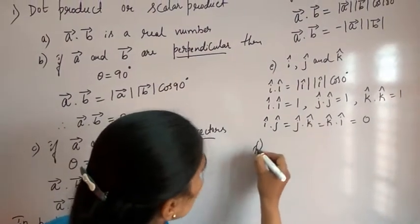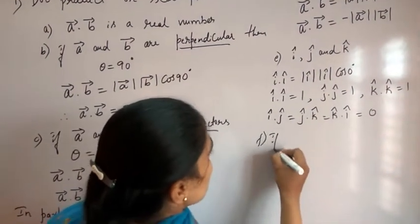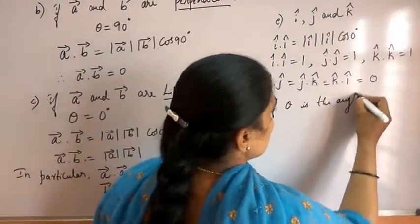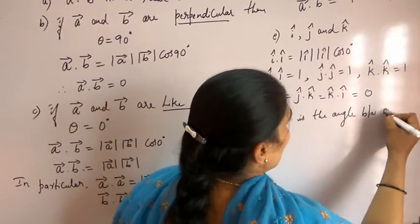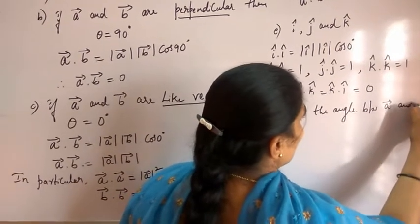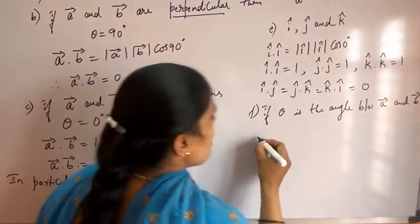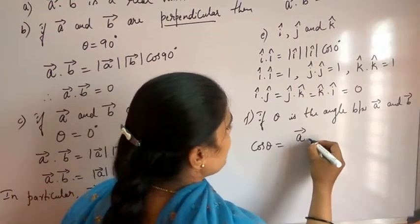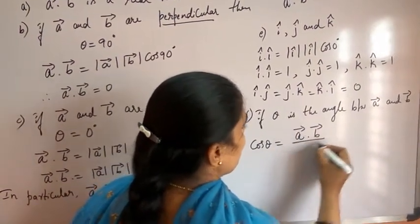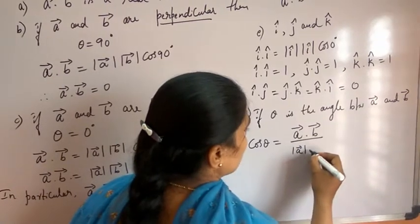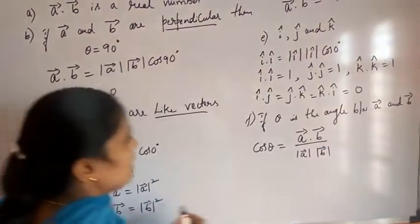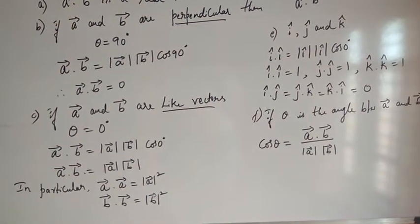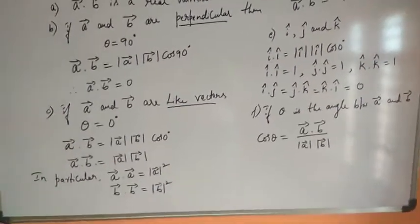Since theta is the angle between vector A and vector B, the formula for cos theta is: cos theta equals vector A dot vector B divided by magnitude of vector A into magnitude of vector B. These are all very important points to recall.